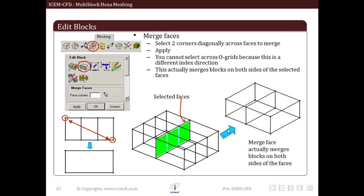Now let's move to next method of editing block. This is the merge face option. Here we need to specify diagonally opposite corners across faces of blocks to be merged. This operation merges blocks on both sides of selected faces. Although we cannot select across O-grid because O-grid has different index control. In order to understand any effect of blocking operation, it is generally useful to check index control before and after an operation.